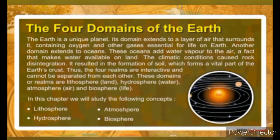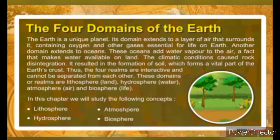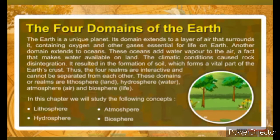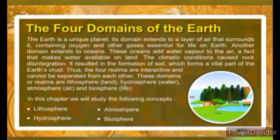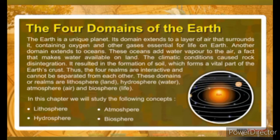The Earth is a unique planet. Its domain extends to a layer of air that surrounds it, containing oxygen and other gases essential for life on Earth. Another domain extends to oceans. These oceans add water vapor to the air, a fact that makes water available on land. The climatic conditions caused rock disintegration, resulting in the formation of soil, which forms a vital part of the Earth's crust. Thus, the four realms are interactive and cannot be separated from each other.